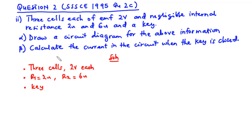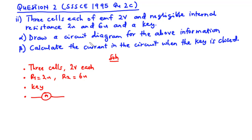For part beta we have to calculate the current when the key is closed, so we can add an ammeter to the list. This ammeter is going to measure the current that flows through the circuit; it has no significant effect on the circuit. Now let's draw the circuit diagram for the information above.